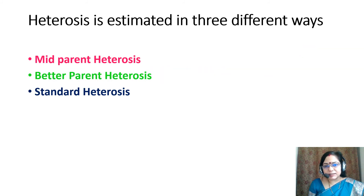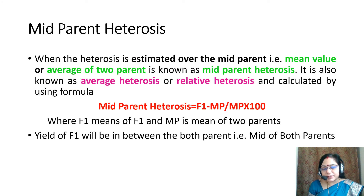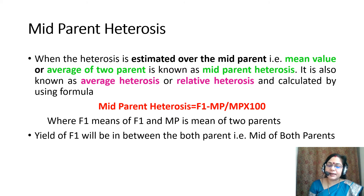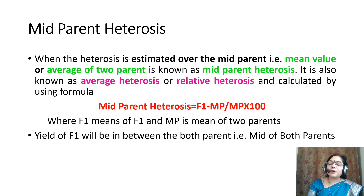Heterosis is estimated in three different ways: number one is mid-parent heterosis, number two is better parent heterosis, and number three is standard heterosis. Mid-parent heterosis is when heterosis is estimated over the mid-parent — that is, the mean or average value of two parents. It is also known as average heterosis or relative heterosis, calculated by the formula: (F1 − MP) / MP × 100, where F1 is the F1 hybrid and MP is the mean of the two parents.